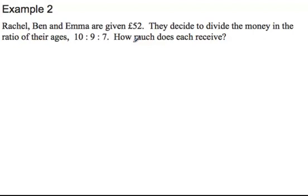So 10 to 9 to 7 is the total ratio here. And we need to find out how many parts are there first. So to do that, we have to add them all up. So 10 plus 9 plus 7, and that equals 26.